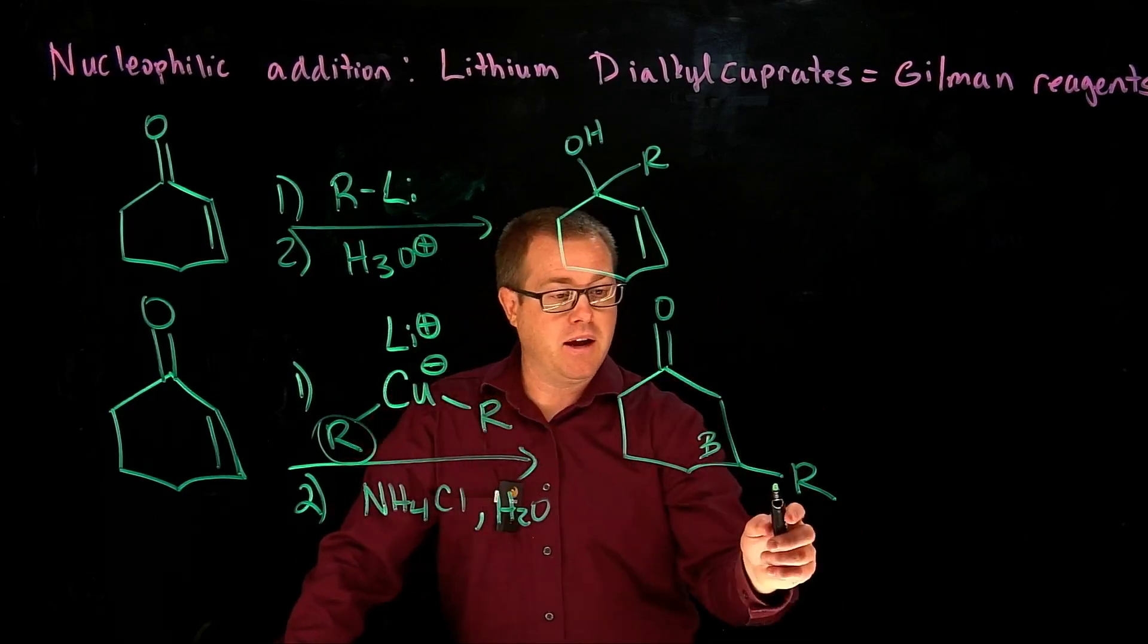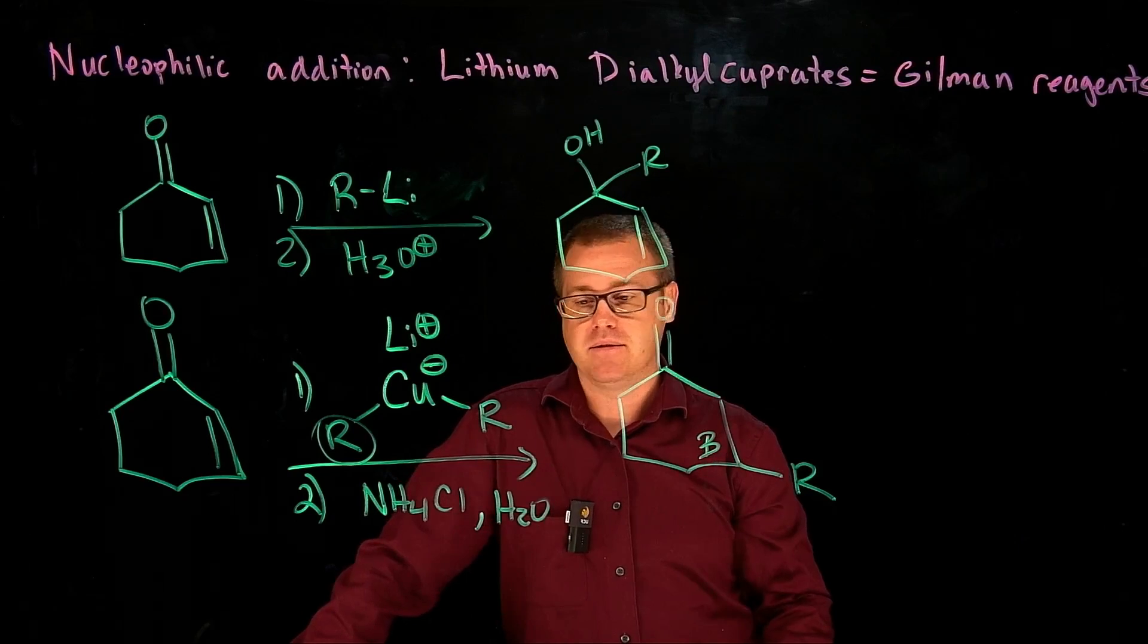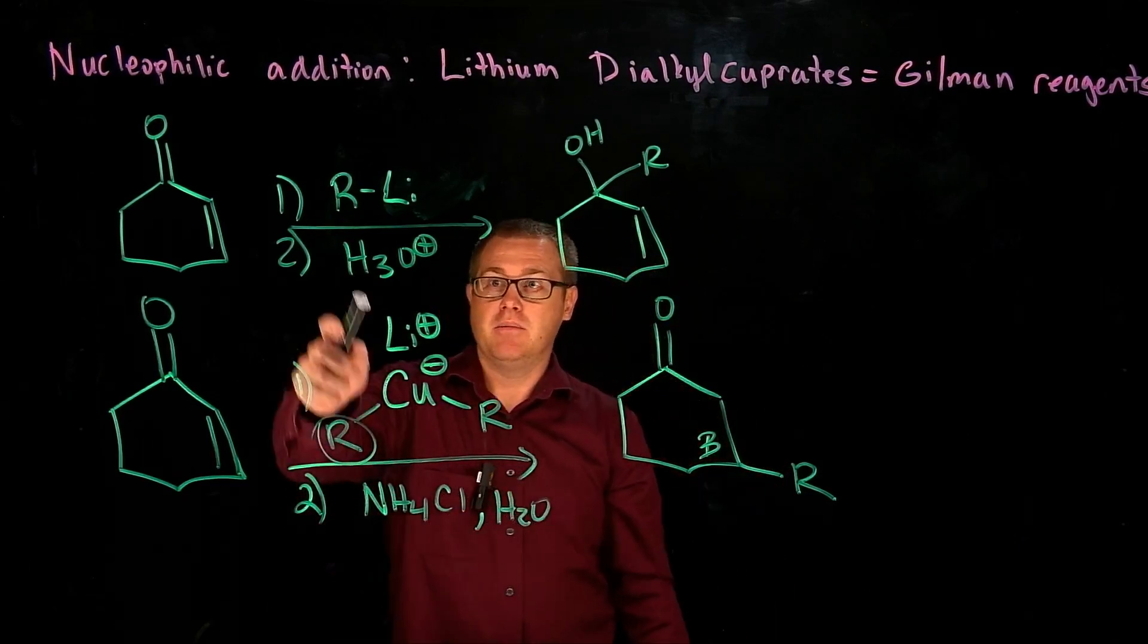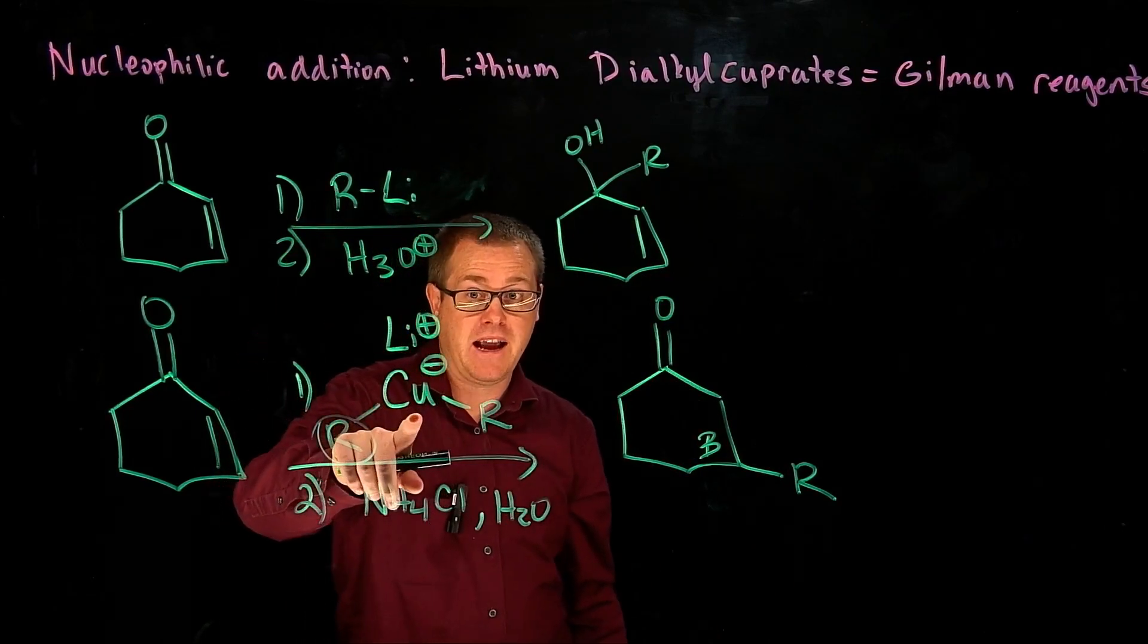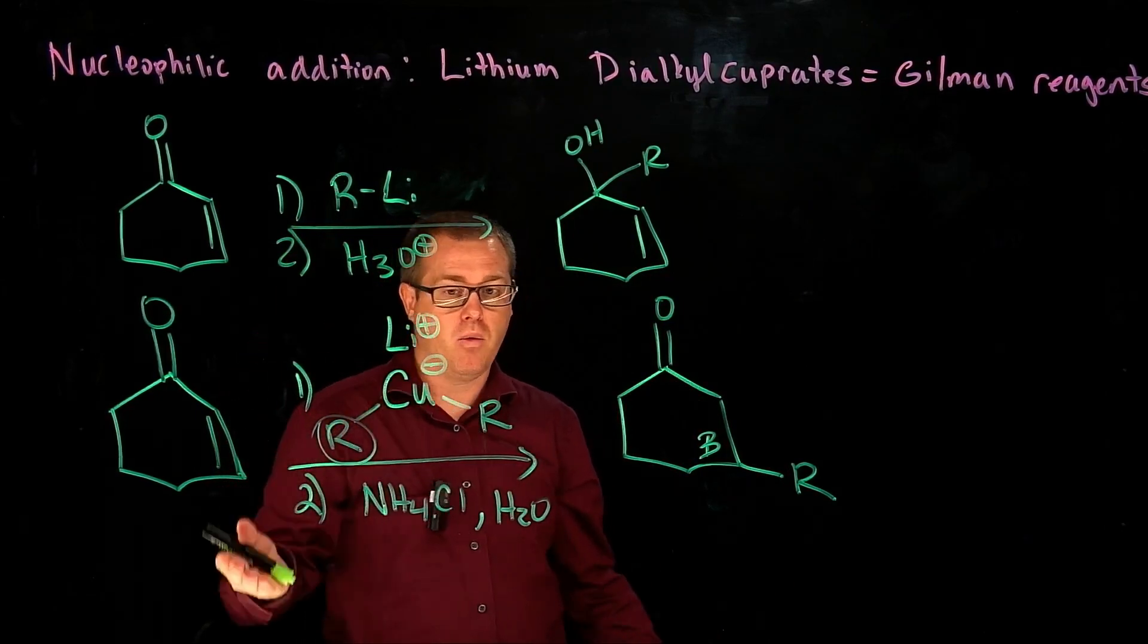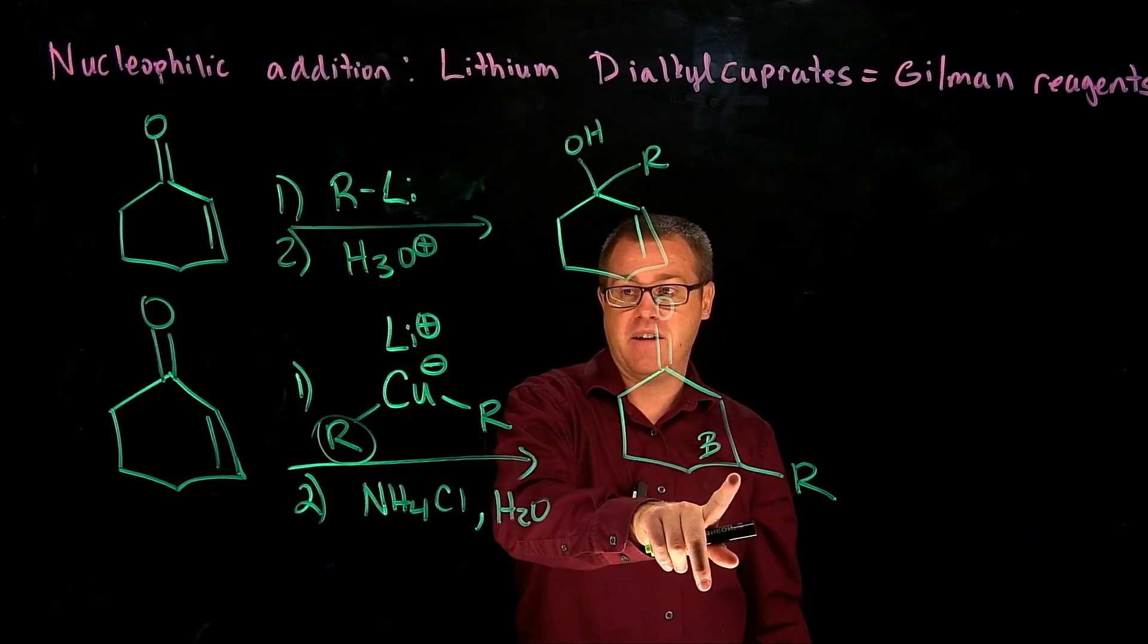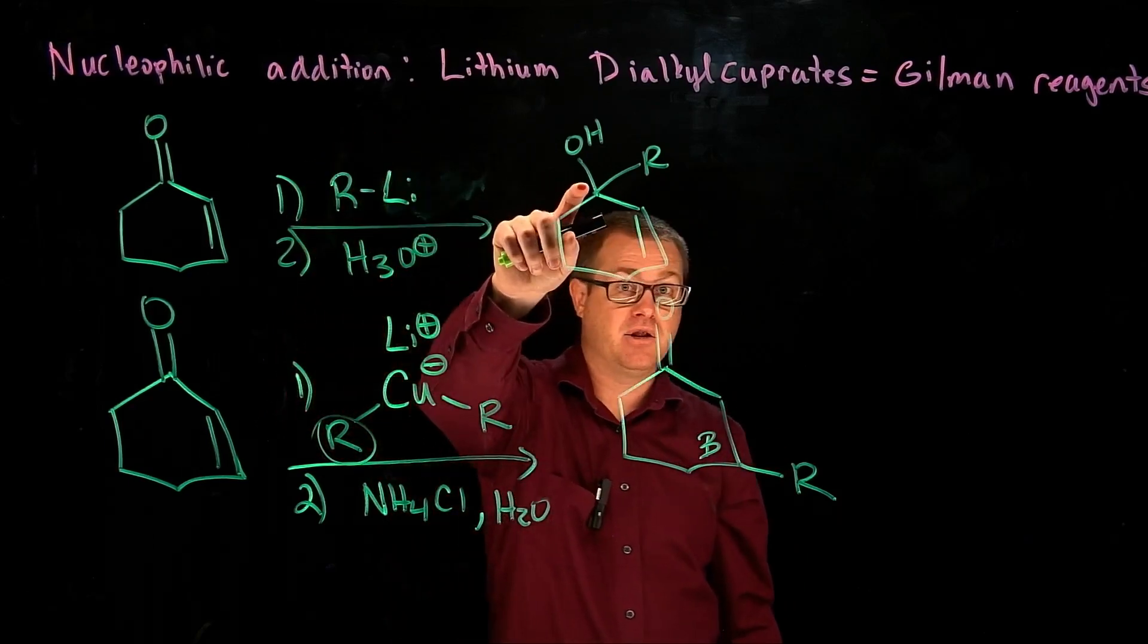And so that would be our thermodynamic product and our Michael addition. And I think that's so cool, because the organometallic reagents, that is an organometallic reagent. But why does this one add in a Michael addition fashion, and the others, the Grignard's and the alkyl lithium, add in a direct fashion?